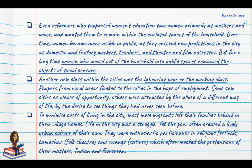But for a long time, women who moved out of the household to public spaces remained objects of social censure — they were disrespected and ridiculed. Another new class within the cities was the labouring poor or working class. Paupers from rural areas who had lost their lands came to the city in hope of employment. To minimise the cost of living, most male migrants left their families behind in their villages. Life in the city was a struggle, yet the poor often created a lively urban culture of their own, enthusiastically participating in religious festivals, tamashas and swangs which often mocked the pretensions of their masters — both Indian and European.